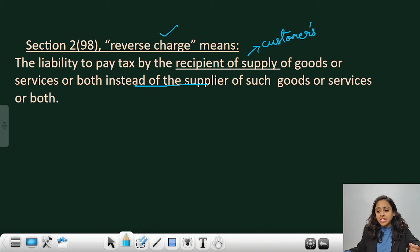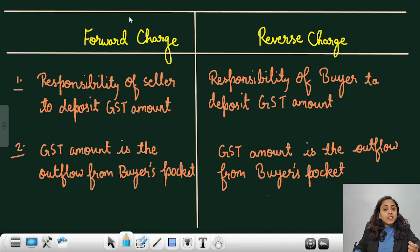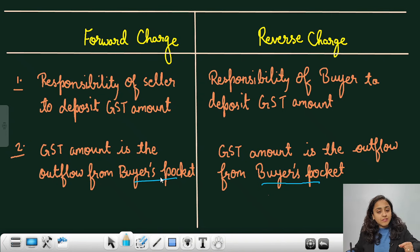Under forward charge, GST amount is the outflow from the buyer's pocket and under reverse charge also GST amount is the outflow from the buyer's pocket. In both the cases, the final taxes are being paid by the customer himself. But here, under forward charge, it is seller's responsibility to deposit. Whereas, under reverse charge, it is buyer's responsibility to deposit the taxes to the government. This is the simple difference between forward charge and reverse charge.